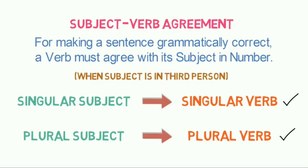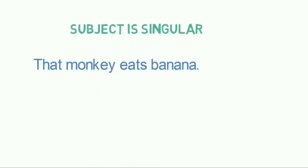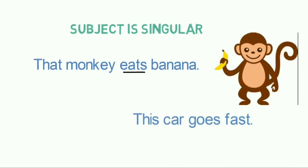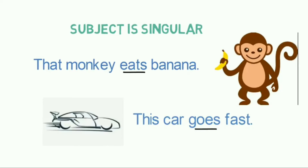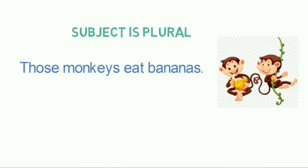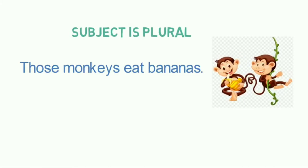Let's look at examples where the subject is singular. 'That monkey eats banana.' Here, the subject is 'monkey,' which is singular, so the verb will also be singular — in this case, 'eats.' Another example: 'This car goes fast.' Here, the subject is 'car,' which is singular, so the verb is singular — 'goes.' Now let's look at the same examples where the subject is plural. 'Those monkeys eat bananas.' Here, the subject is 'monkeys,' which is plural, so the verb is also plural — 'eat.'